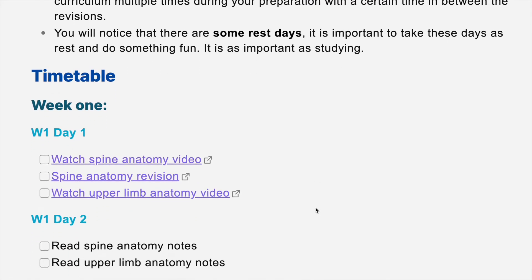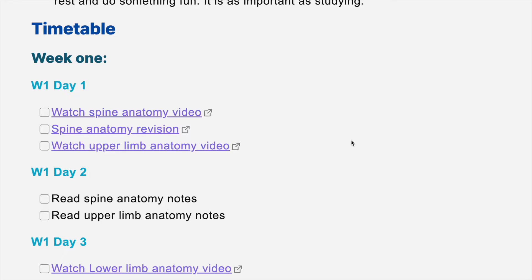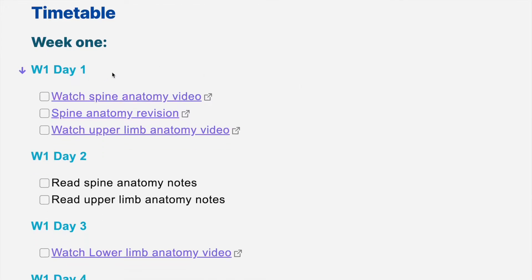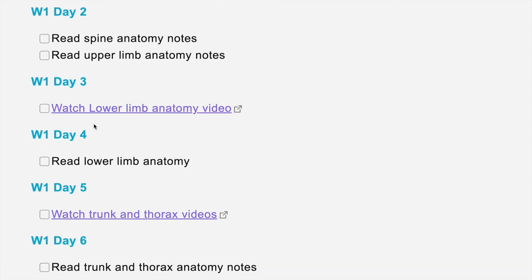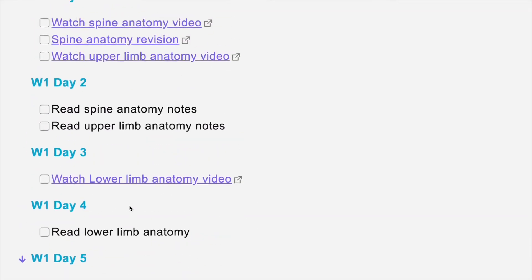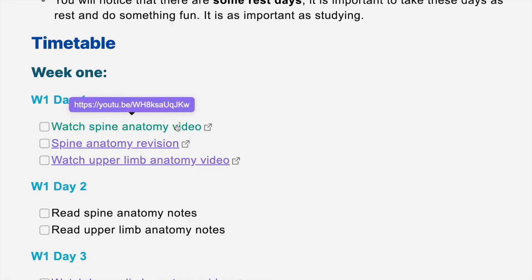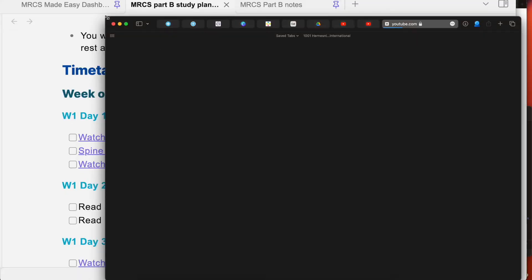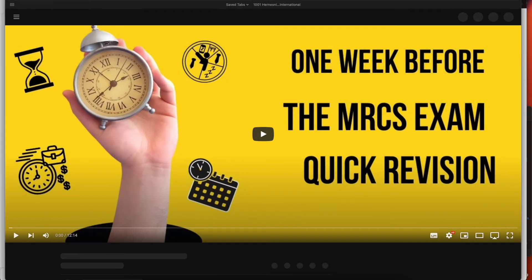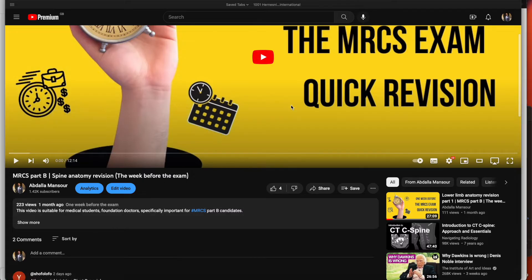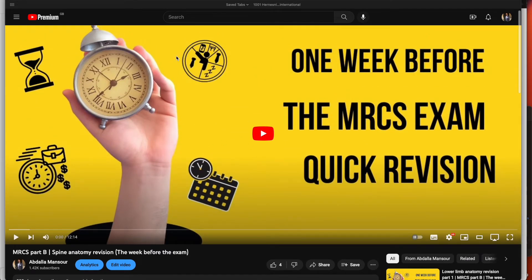As you can see, this is week one — you'll need to print it or use an online version. You have seven days, so day one through day seven. In week one you need to study spine anatomy and upper limb anatomy, starting by watching some videos on day one. Here is the link — you click it and it takes you to the video you need to watch, which is basically a spinal anatomy revision in 12 minutes. You watch the video, take some notes, and then feel free to read whatever notes you're studying from.